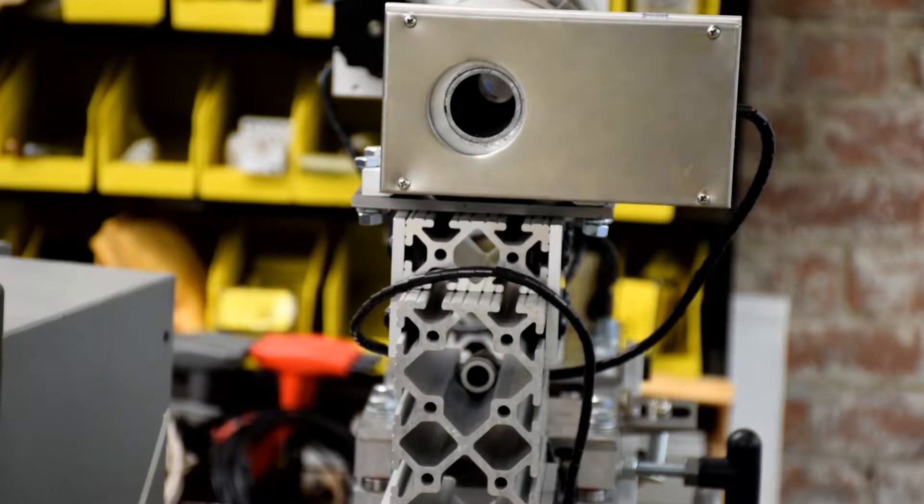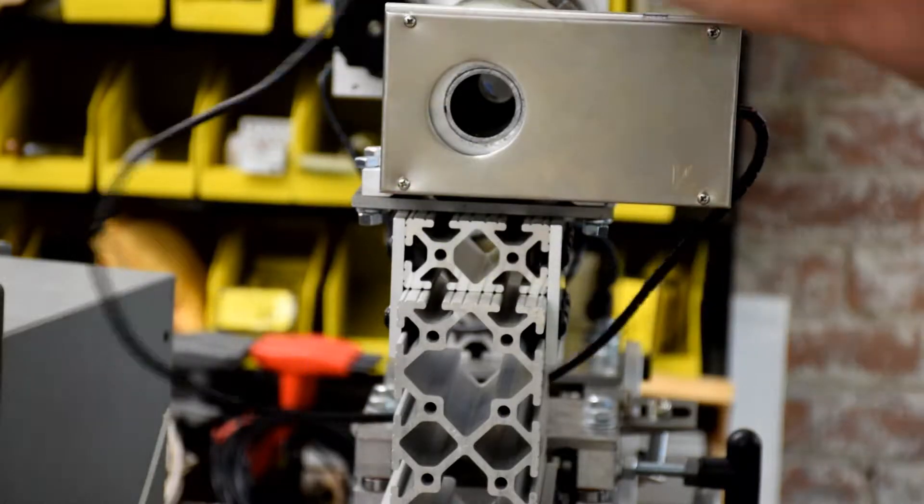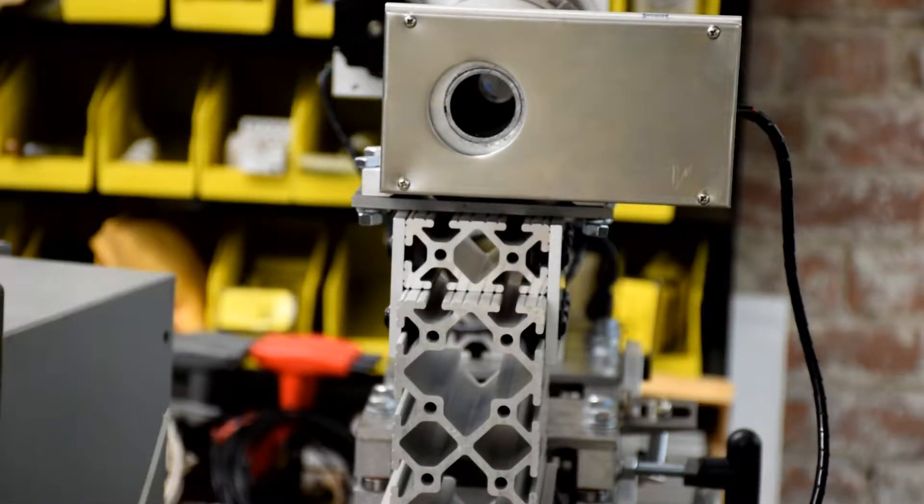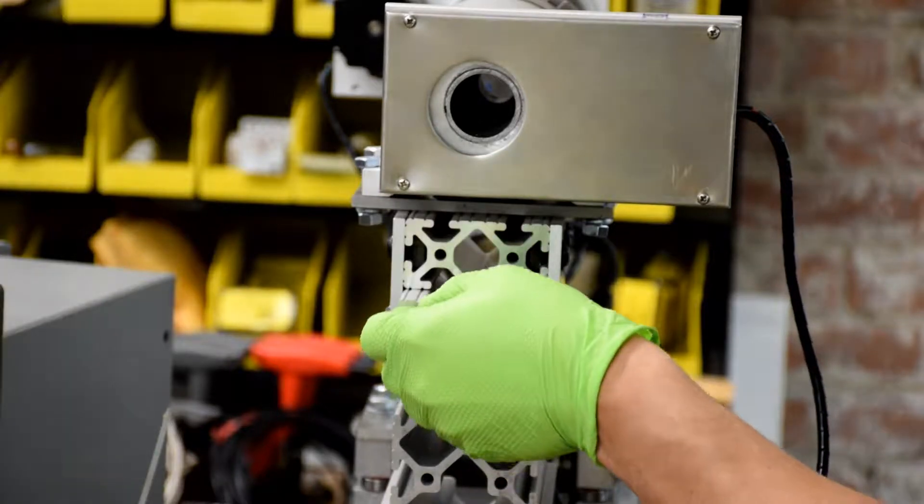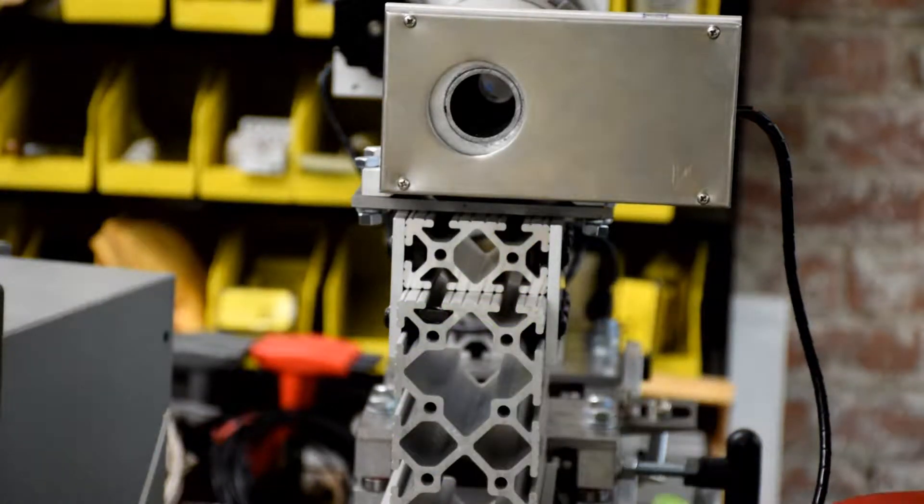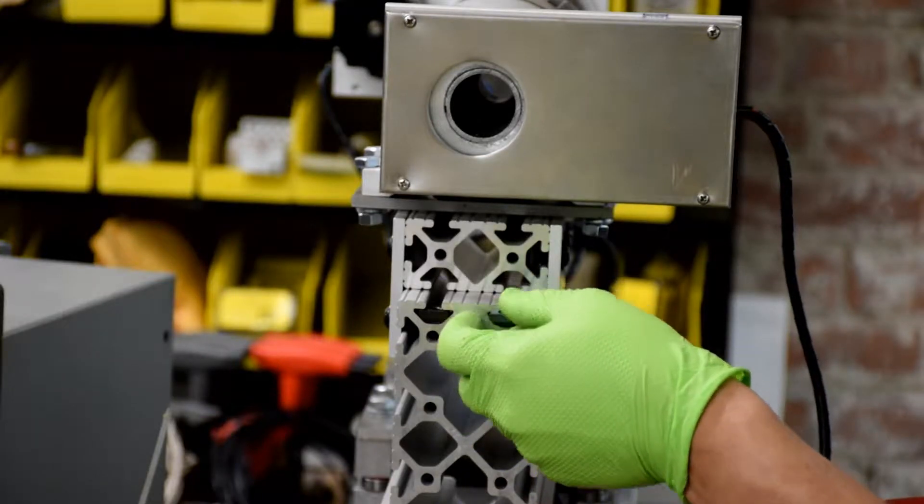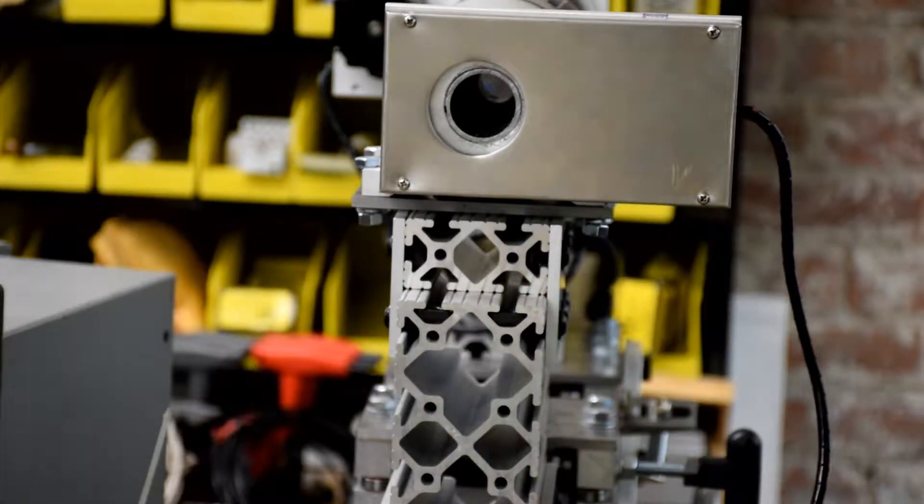We can move on to attaching the enclosure to the 80-20 extrusion with the enclosure mount that you fabricated. We'll be using the same T-nuts and bolts that we used to put the rest of the frame together with. You should have quite a few left over.